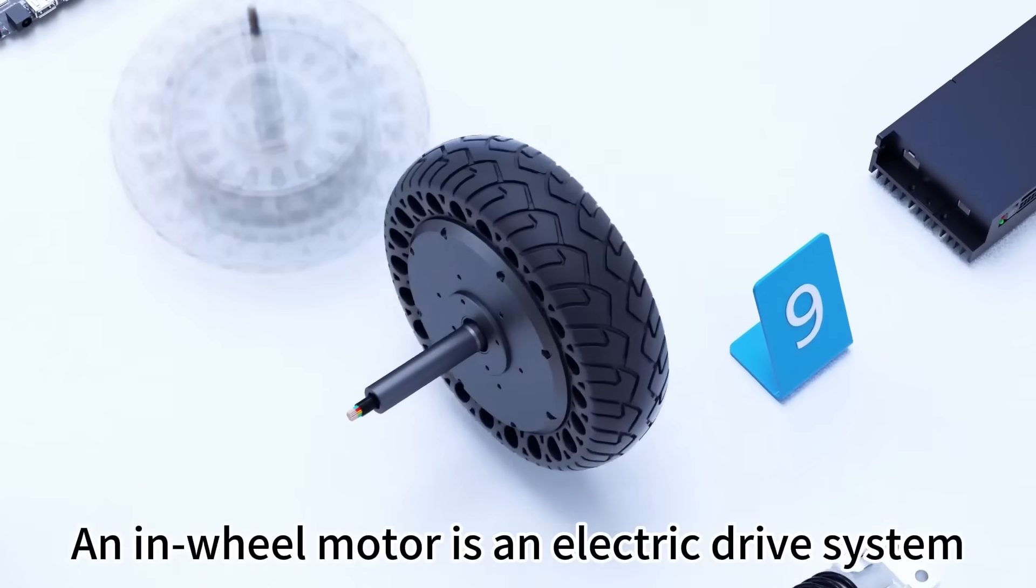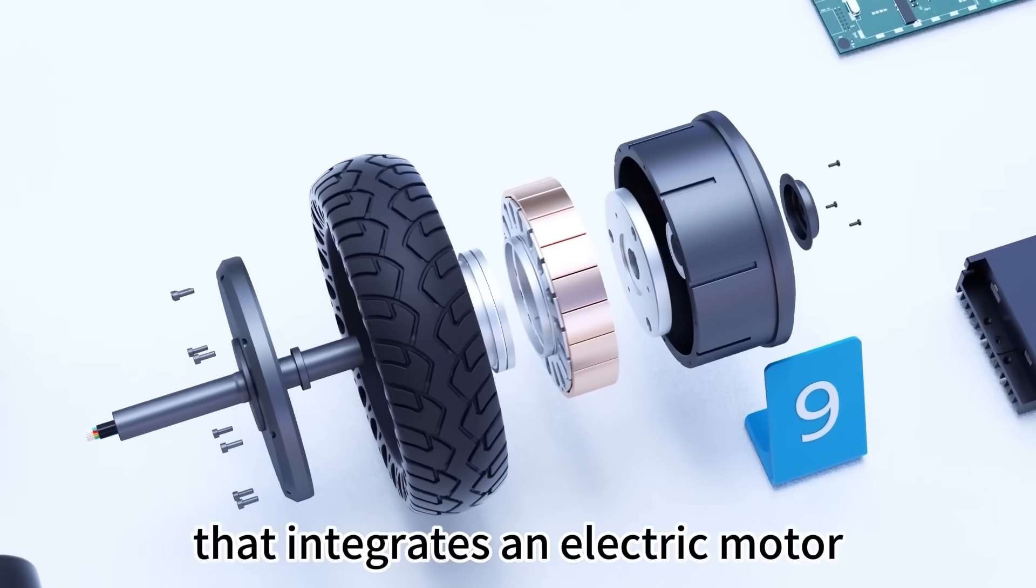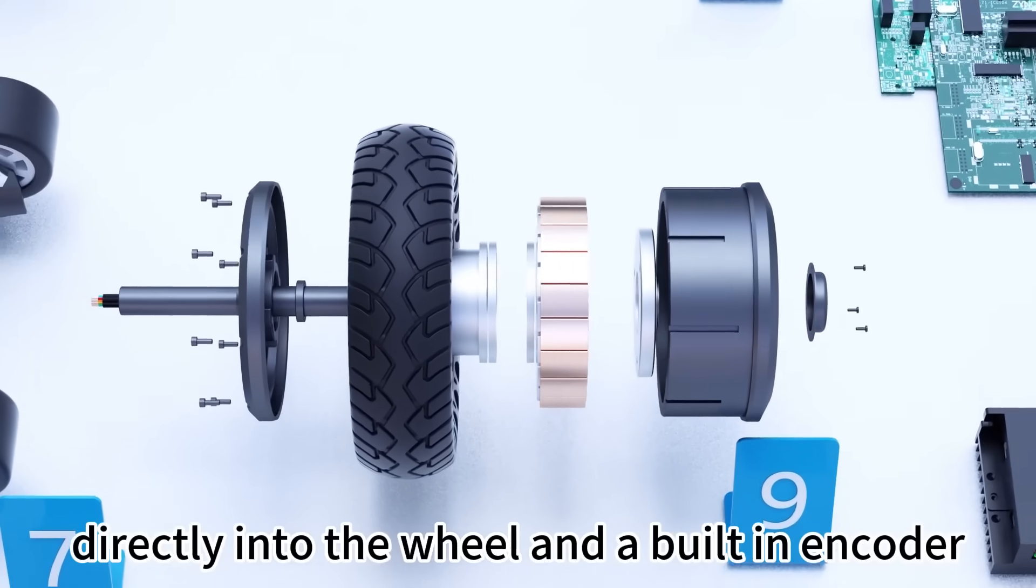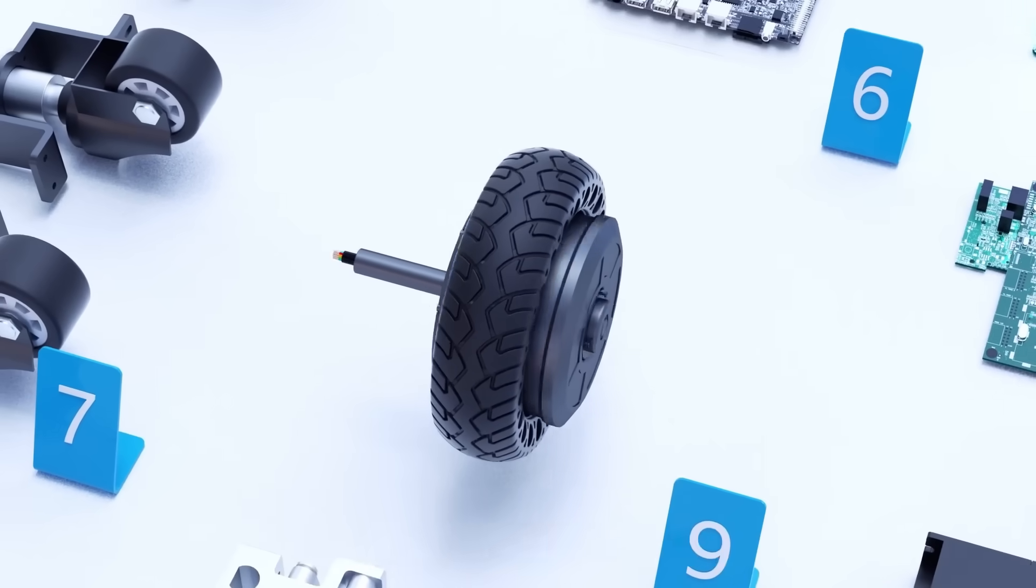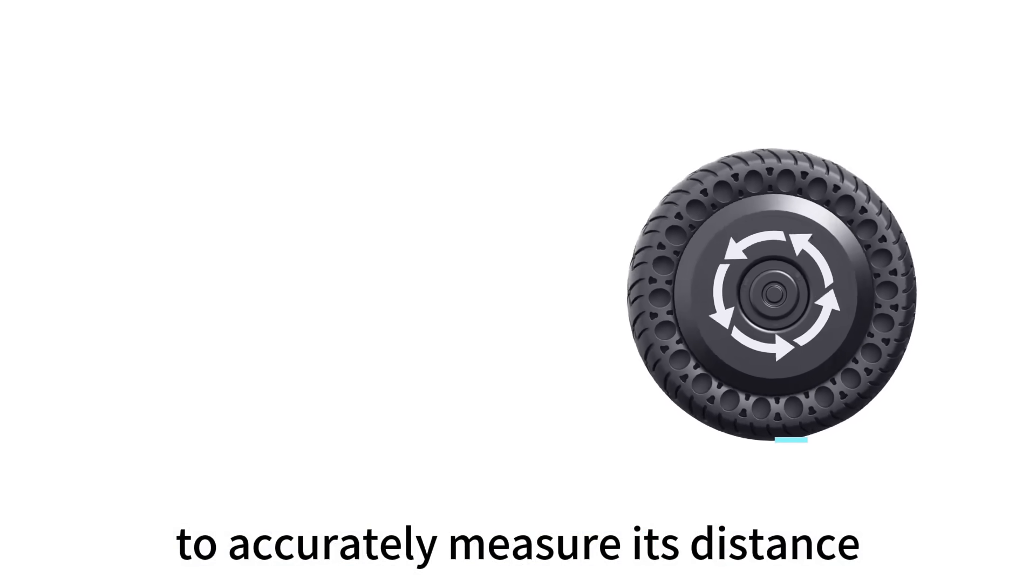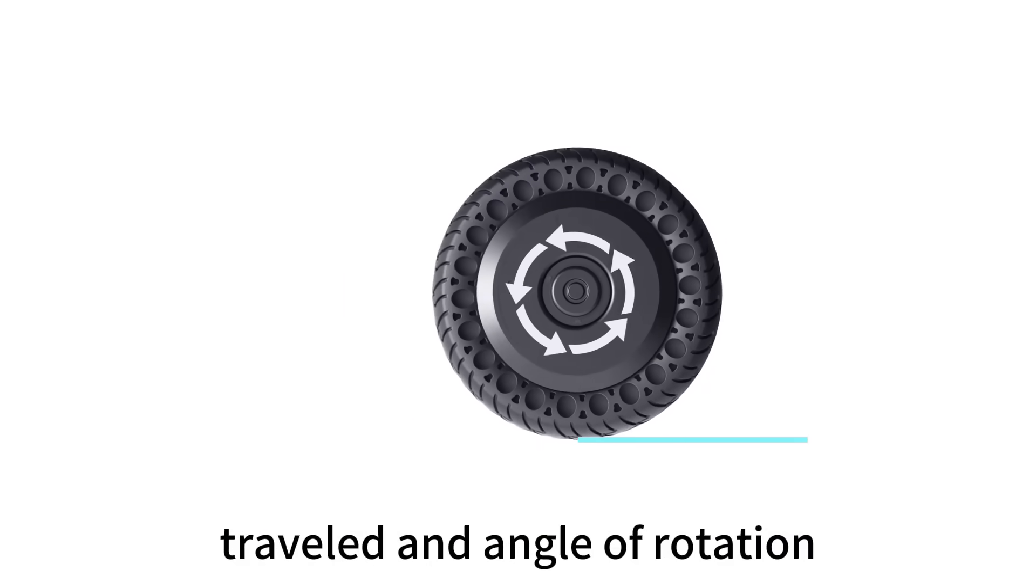An in-wheel motor is an electric drive system that integrates an electric motor directly into the wheel with a built-in encoder to measure the wheel's rotation. This allows the robot to accurately measure its distance traveled and angle of rotation.